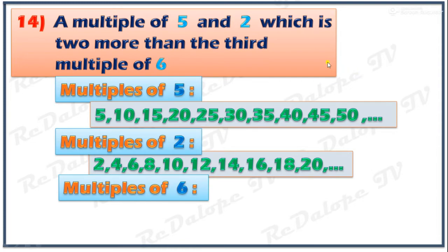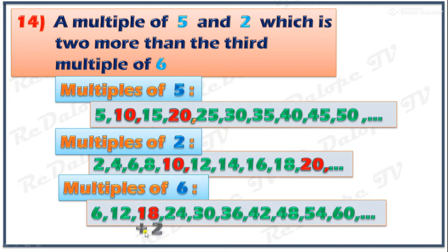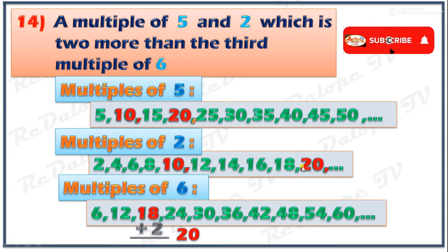We have 10 and 10, and 20 and 20 as common multiples of 5 and 2. To find the exact answer, we use the clue: 2 more than the third multiple of 6. The third multiple of 6 is 18, and 18 plus 2 equals 20. So the final answer is 20.